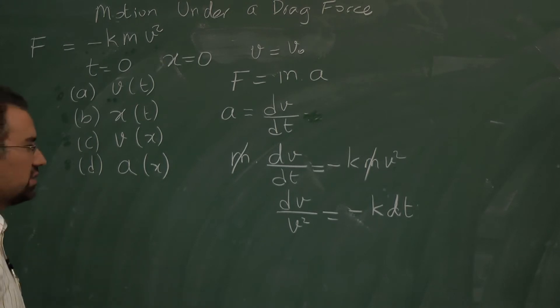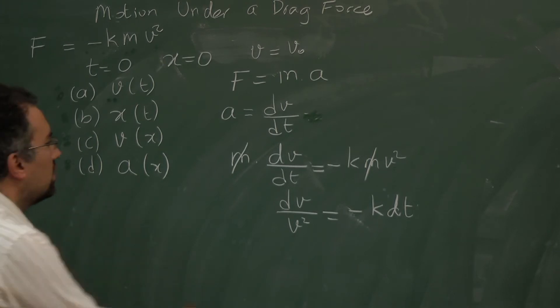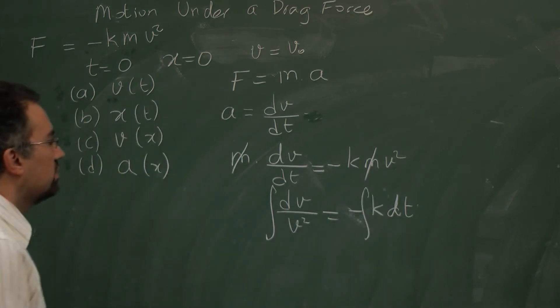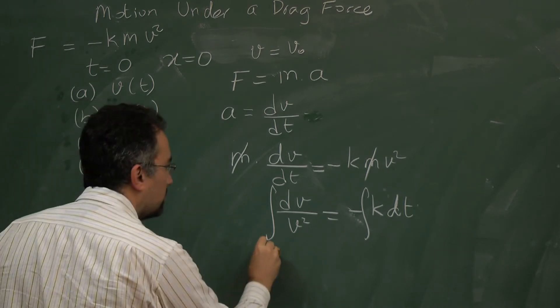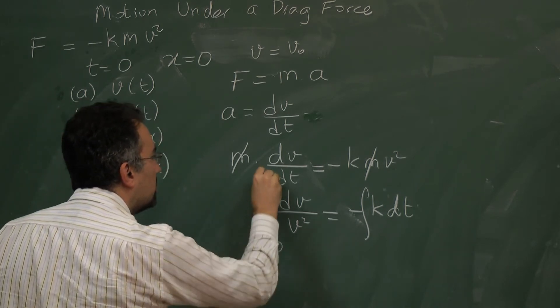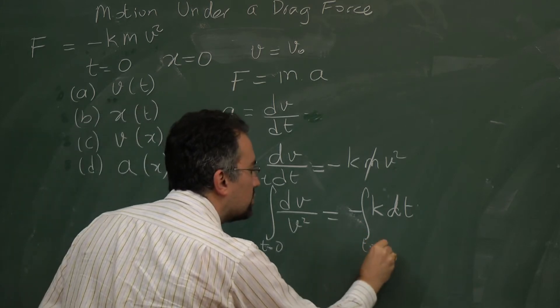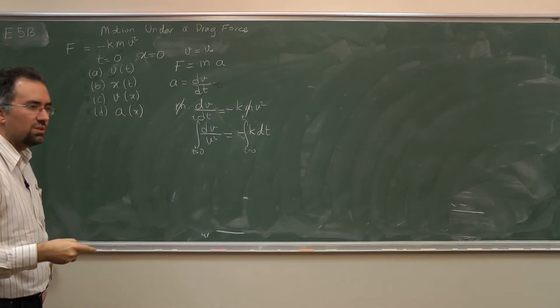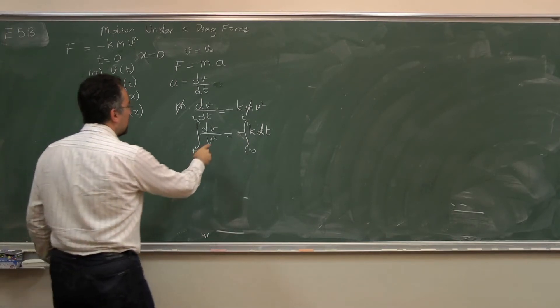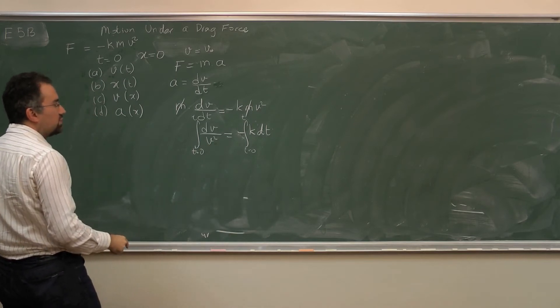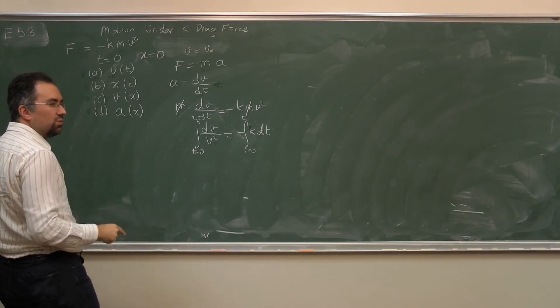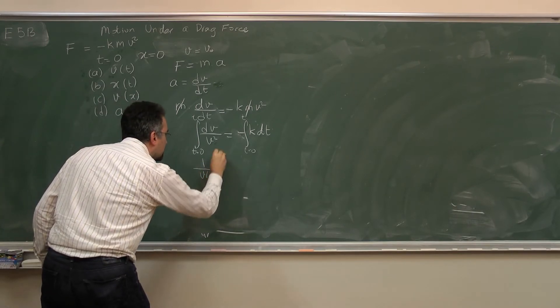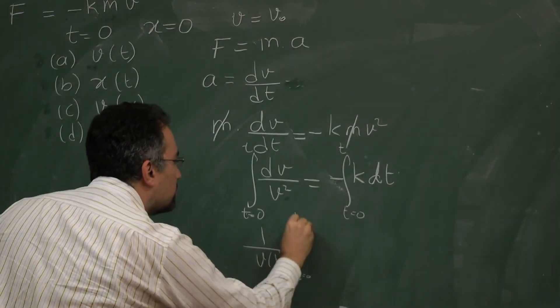So I have essentially I can move the v squared over here. It's just separable. So you have dv over v squared equals minus k dt. Now if I integrate both sides, the nice part is that I can do definite integration from t equals 0 to t, in which case I will not have a constant to worry about.